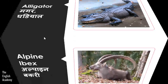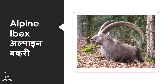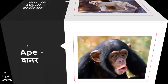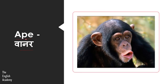Next animal is Alpine Ibex — we call it Alpine Bakri. Let us see the next animal. Bheria is Arctic Wolf, and this is found in the cold polar regions. Next animal is Warnar, which we call Ape.